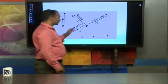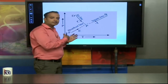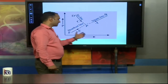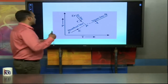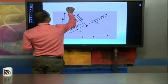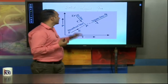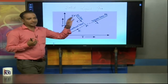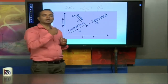This is an example of a phase diagram. The Y-coordinate represents pressure, and the X-axis represents temperature. We know that we have three states: Solid, Liquid, and Gas. We can convert solid to liquid, liquid to gas, and solid directly to gas.